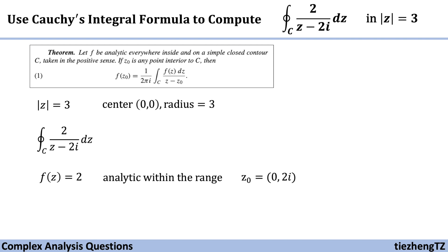And we can also make z0 equals (0, 2i). And since 2 is smaller than 3, we know this point is interior to this contour. So the next step is just to substitute.